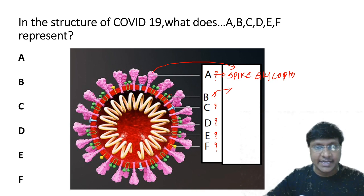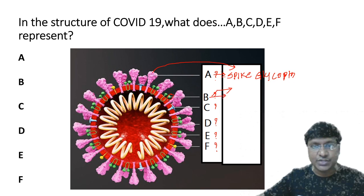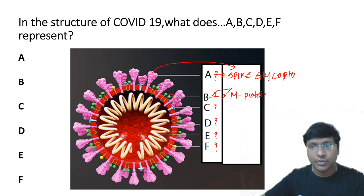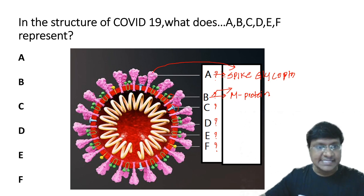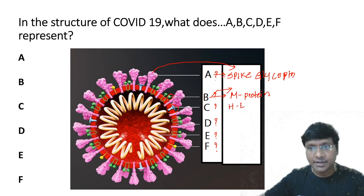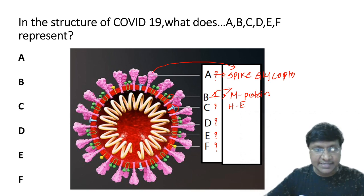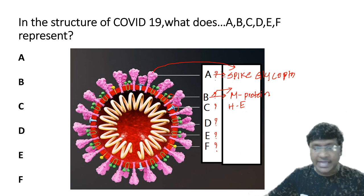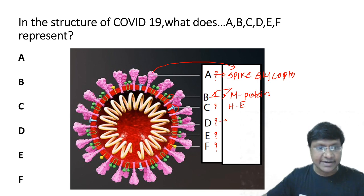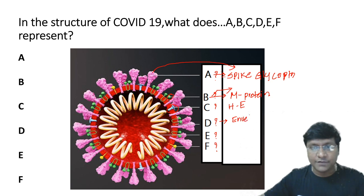Structure B is the green color one — it is your M protein, which is present in the wall of COVID-19. Structure C is the blue color one — it represents the hemagglutinin esterase. Structure D is the red one — it is the envelope of COVID-19.